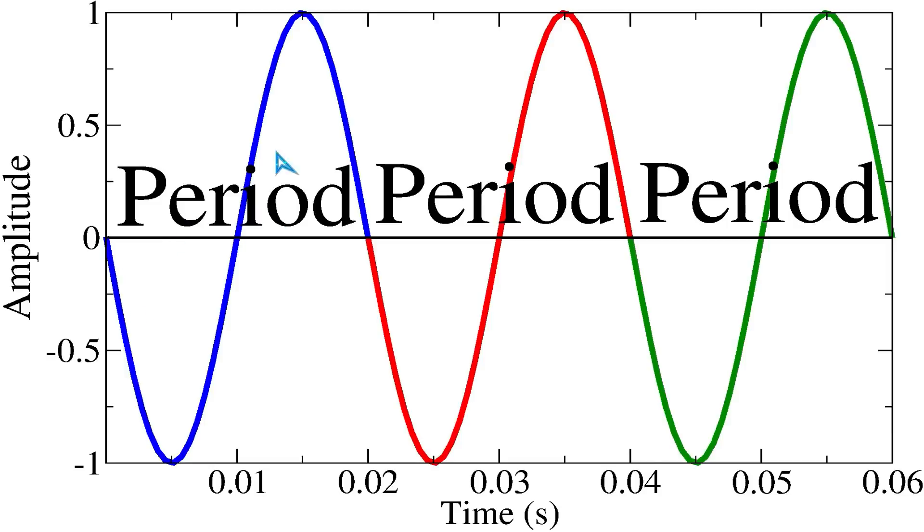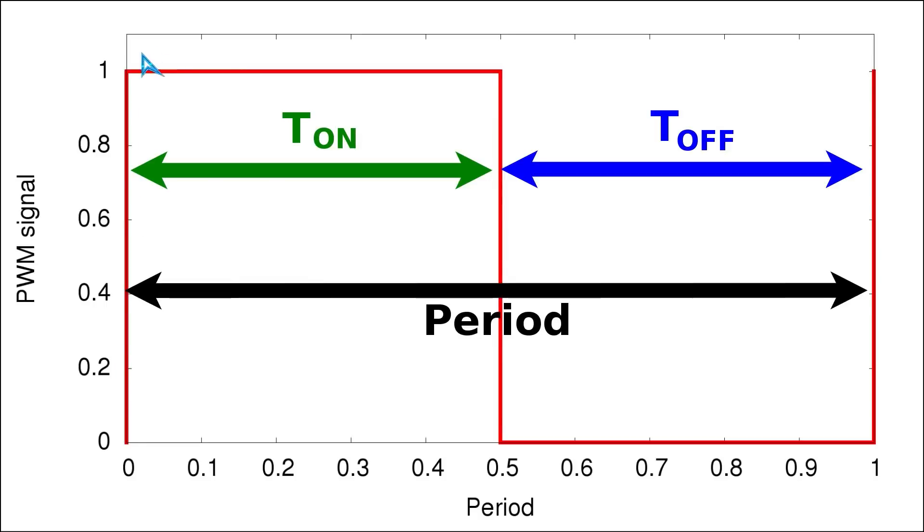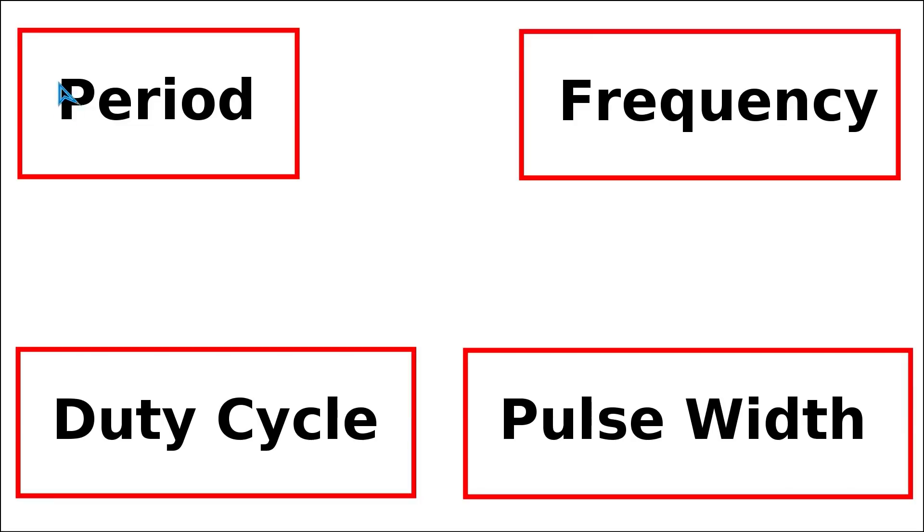In addition to this, we're going to discuss things like periodic functions. Finally, we will discuss the shape of a Pulse Width Modulation signal and different properties including the period, the frequency, the duty cycle, and of course the pulse width.